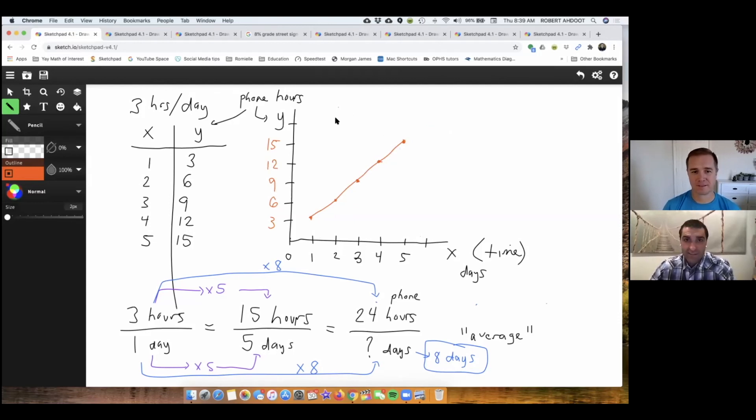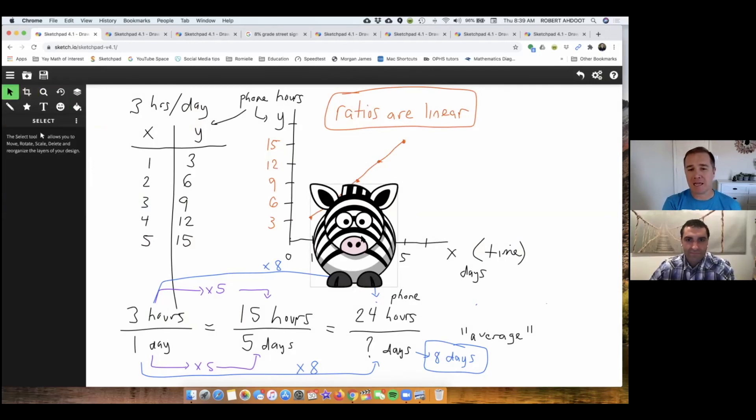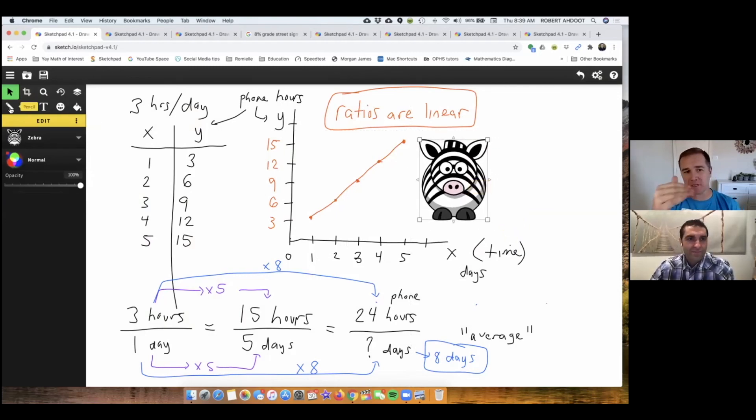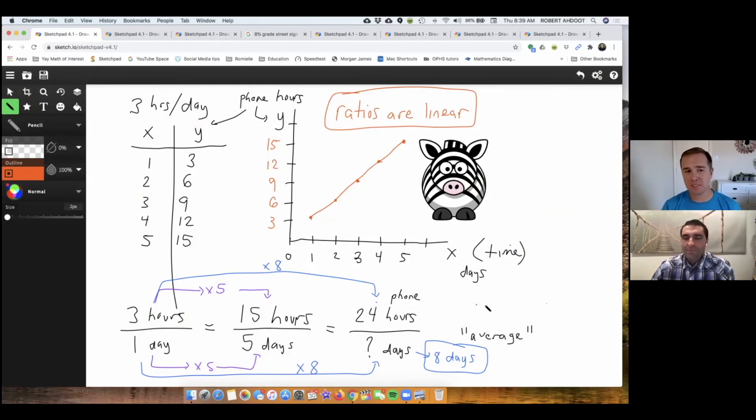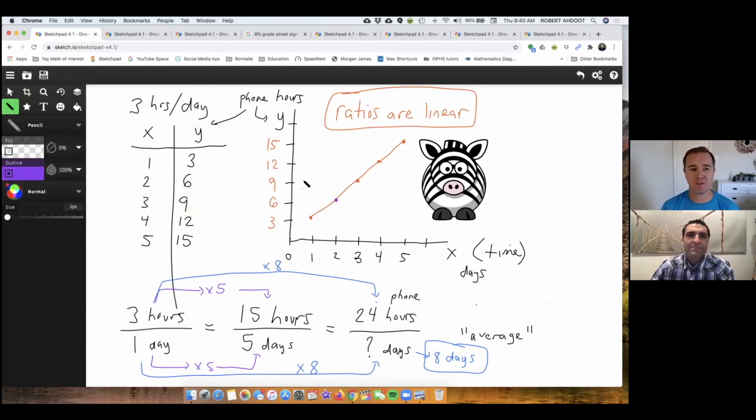This is what you were talking about - we see a trend. The fancy word is linear. Linear is essentially the adjective for line - it's turning line into an adjective. And so it creates a model. It's safe to say then that ratios are linear. How about that? That's cool.